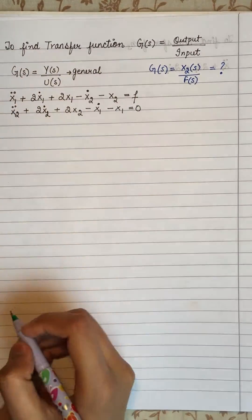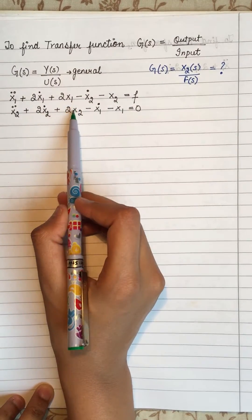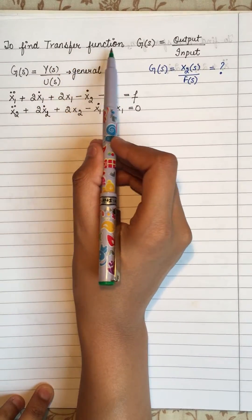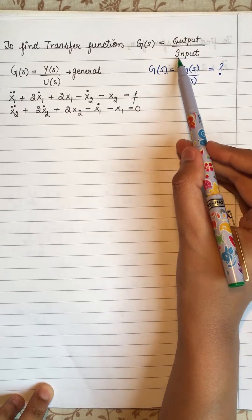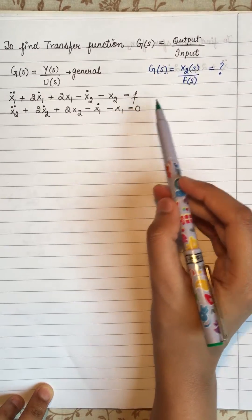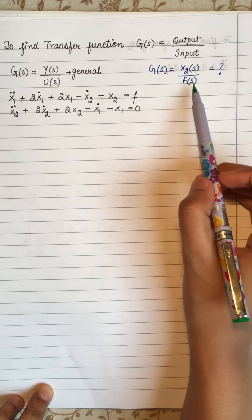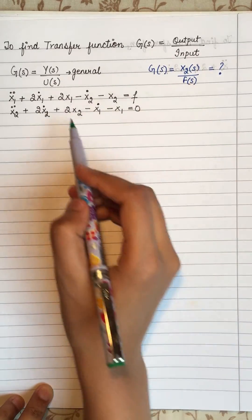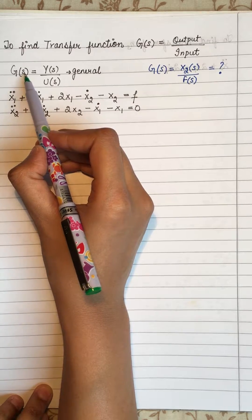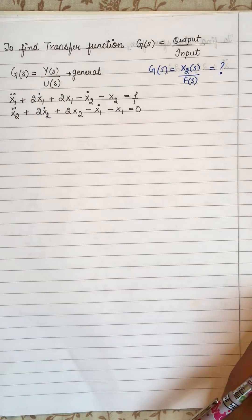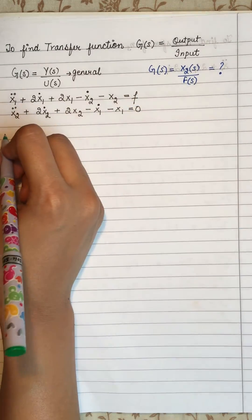In this example we will find the transfer function for two equations. The transfer function is normally the ratio of output divided by input. In our case, we want our output to be X(s) and our input to be force. The 's' inside tells us we are in the frequency domain, so to start we have to change both equations with the help of Laplace transformation.